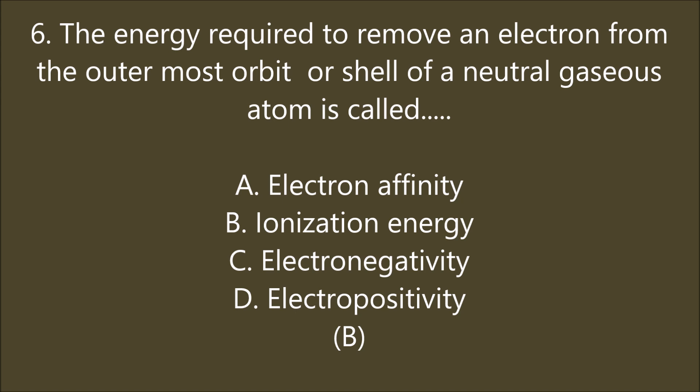The energy required to remove an electron from the outermost orbit or shell of a neutral gaseous atom is called: electron affinity, ionization energy, electronegativity, or electropositivity. B is the right answer — ionization energy. Ionization energy decreases as we go down in a group and generally increases from left to right in a period. Ionization energy is expressed in kJ per mole.